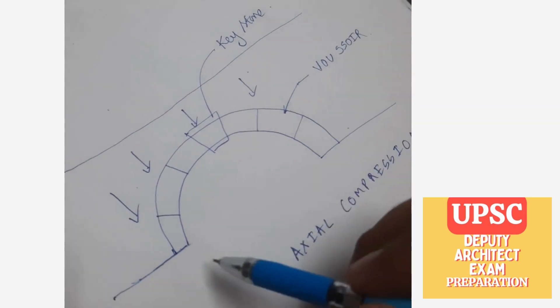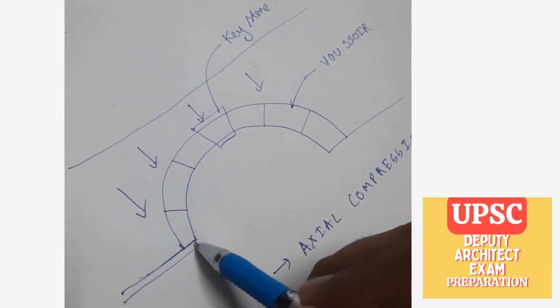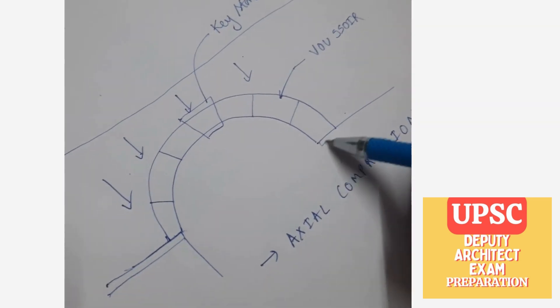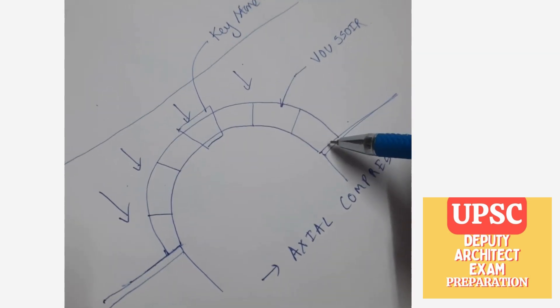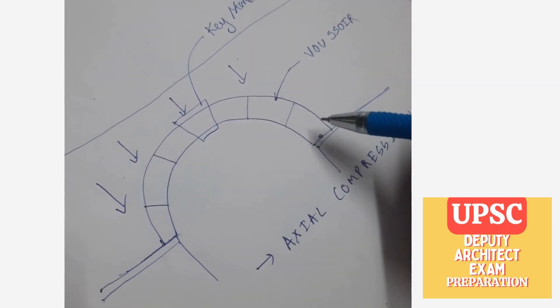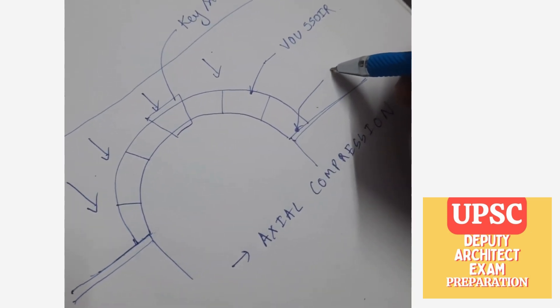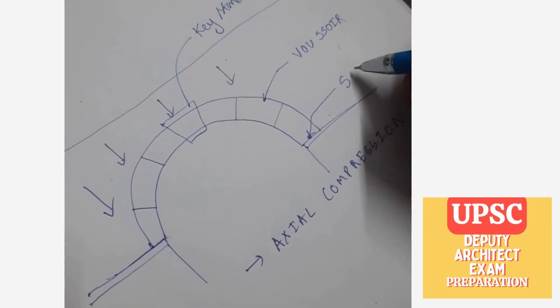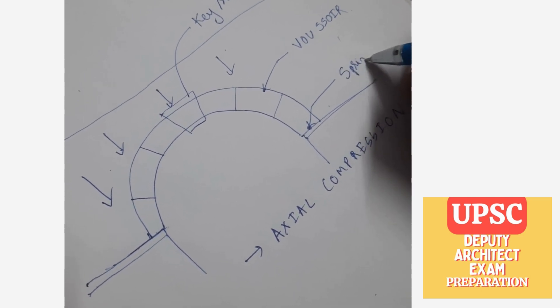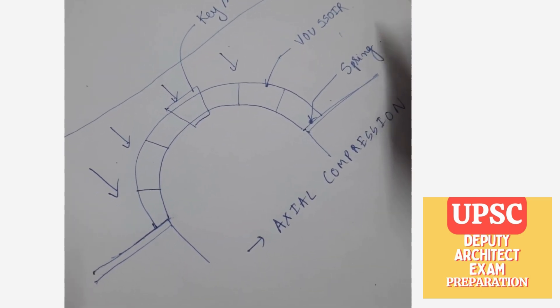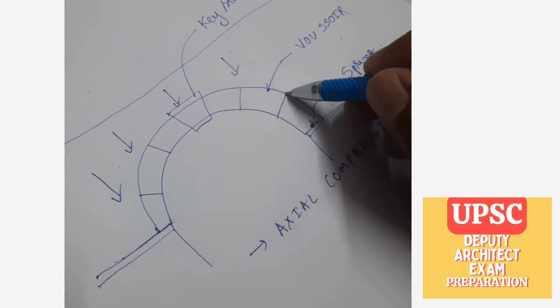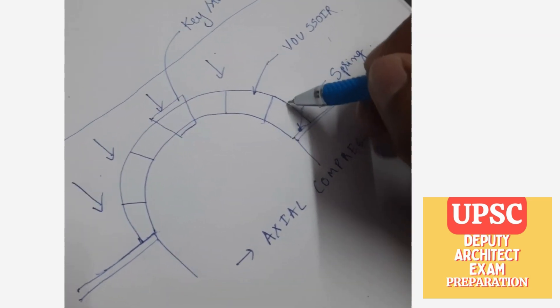Also consider the point at which the arch is resting. This particular point is called spring. And also the last wedge which is at the spring point is called springer.